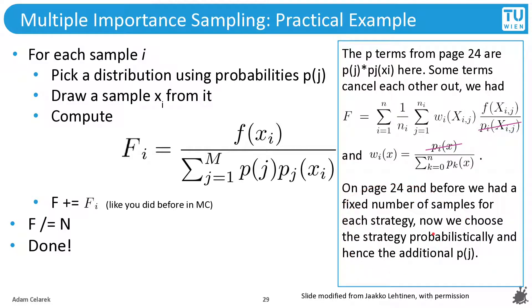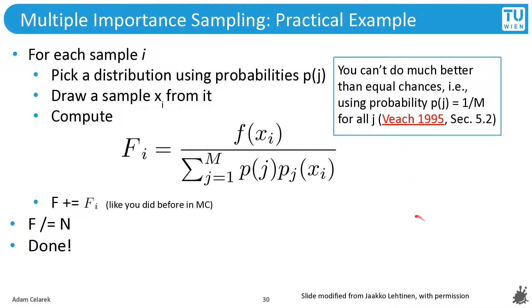Okay, what else? How to choose the probabilities pj. And another result of Eric Veach was that you can't do much better. So it will be within a certain bound of the optimal strategy. If you choose a uniform discrete distribution over all your sampling strategies.